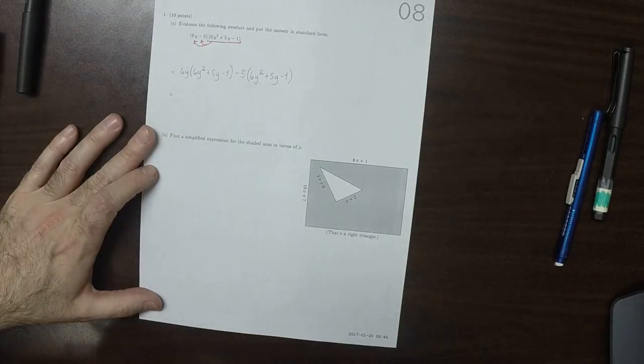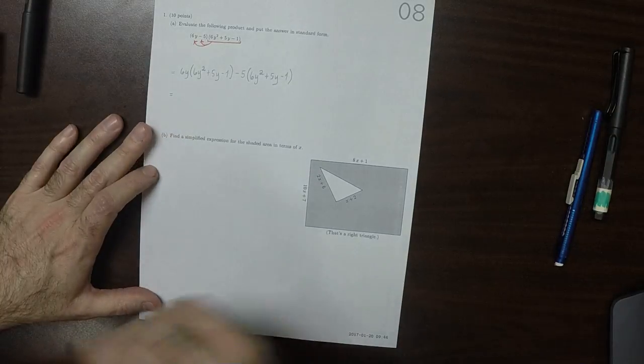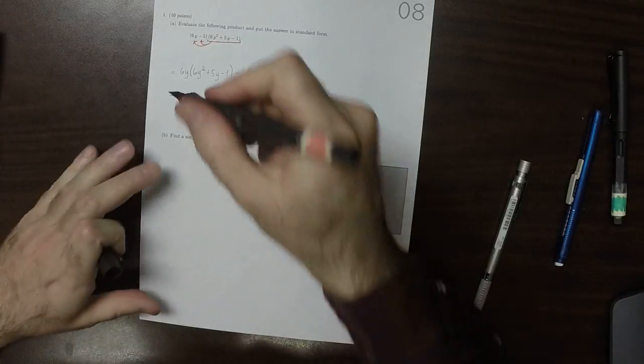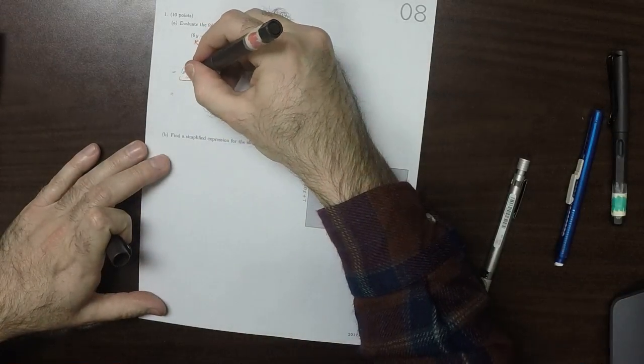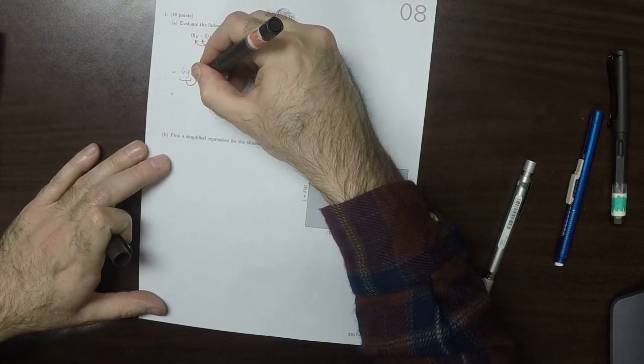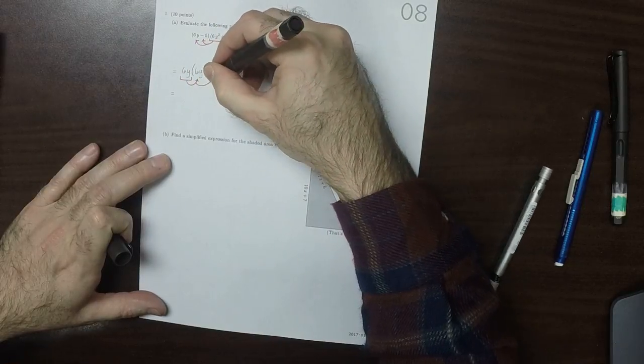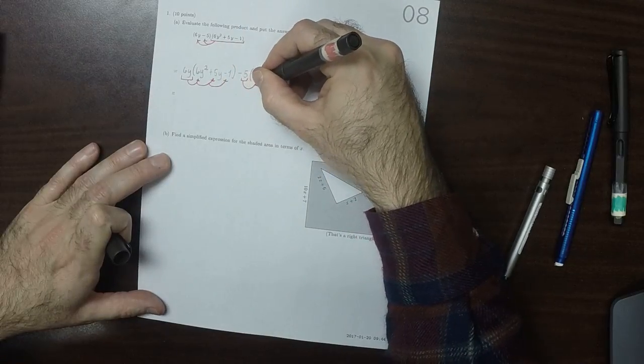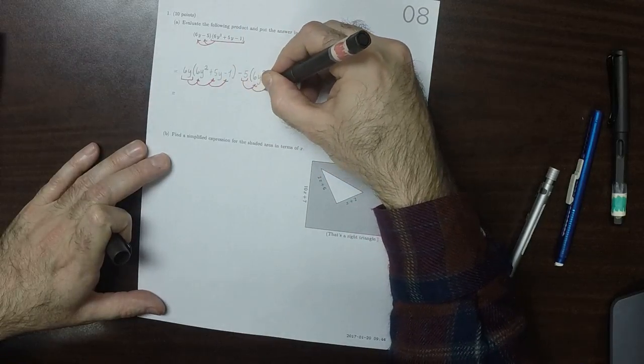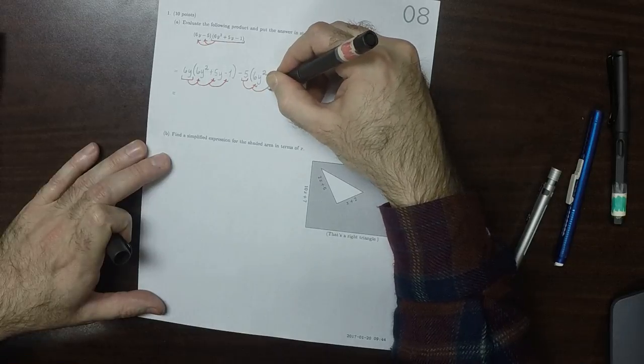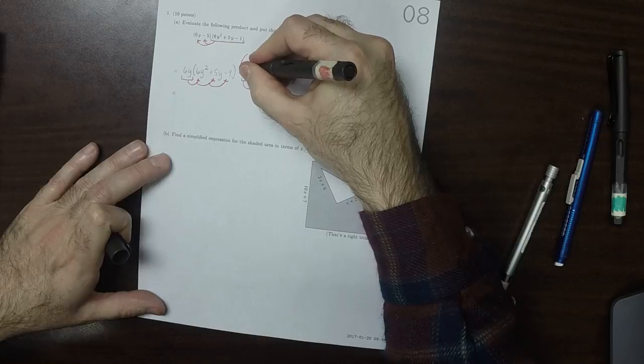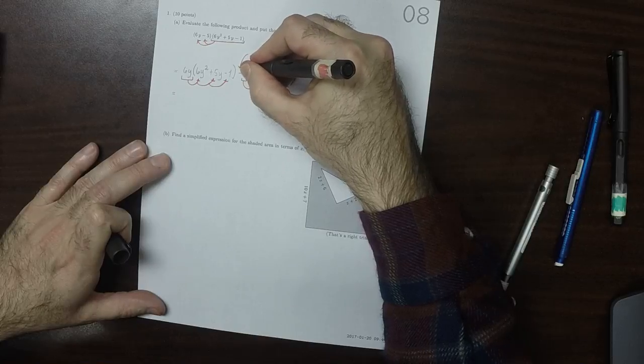So now I'm going to multiply that in. So that is to say, now I'm going to perform this distribution. So this 6y goes in and is distributed, and this 5 is going to go in and be distributed. And notably, you need to be very careful about remembering that that is a subtraction.